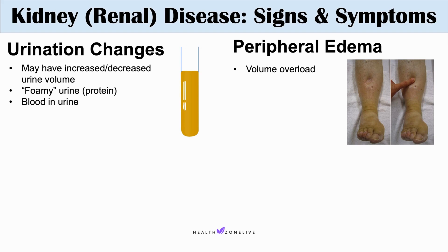We can also see peripheral edema with nephrotic syndrome, a case of kidney disease where there are significant protein losses, particularly loss of albumin. Albumin is the most abundant protein in the blood and helps reabsorb interstitial fluid back into the blood. If there's loss of albumin, as seen in nephrotic syndrome, there's not enough albumin to reabsorb this excess fluid.